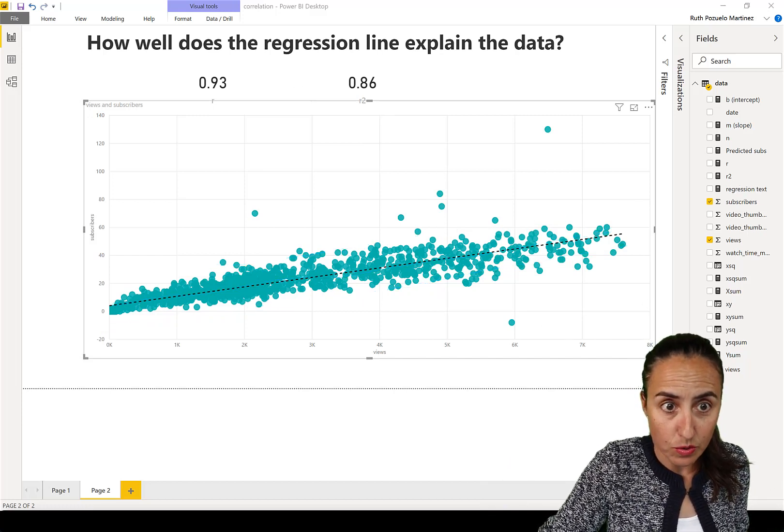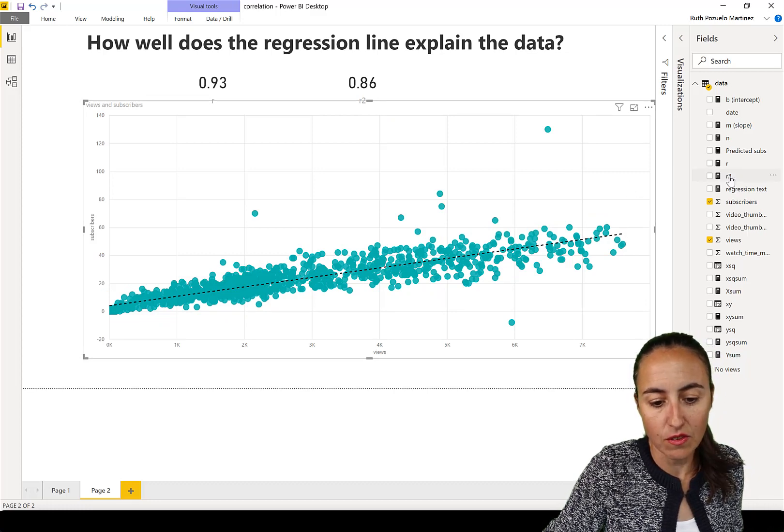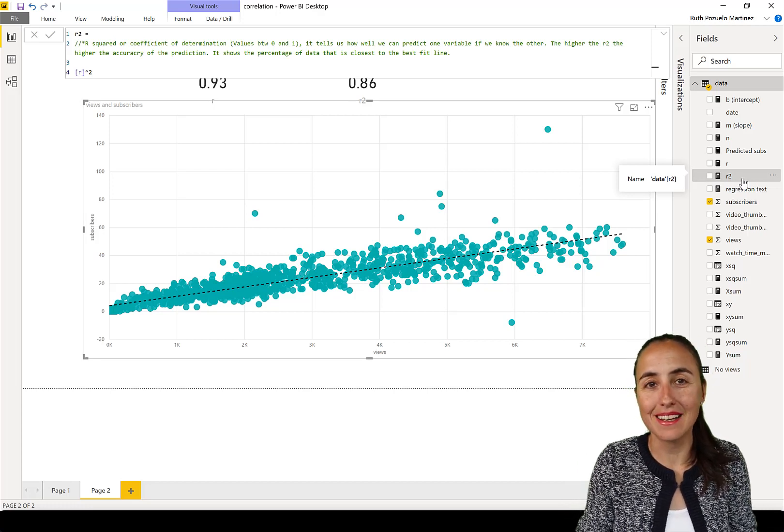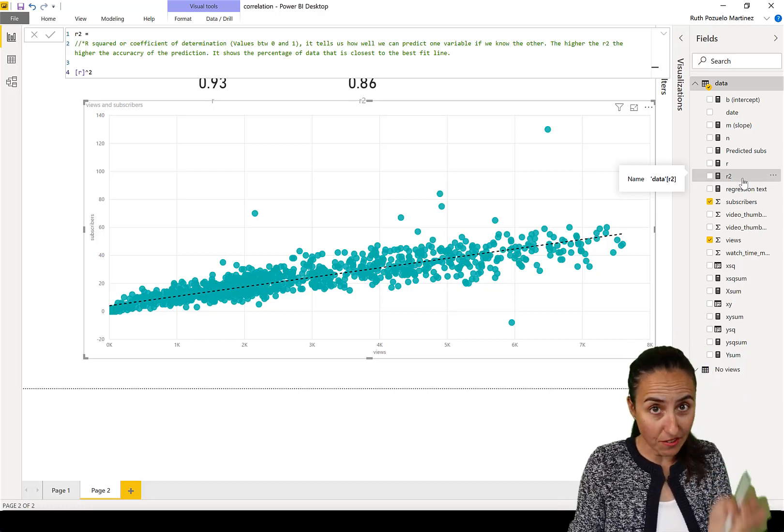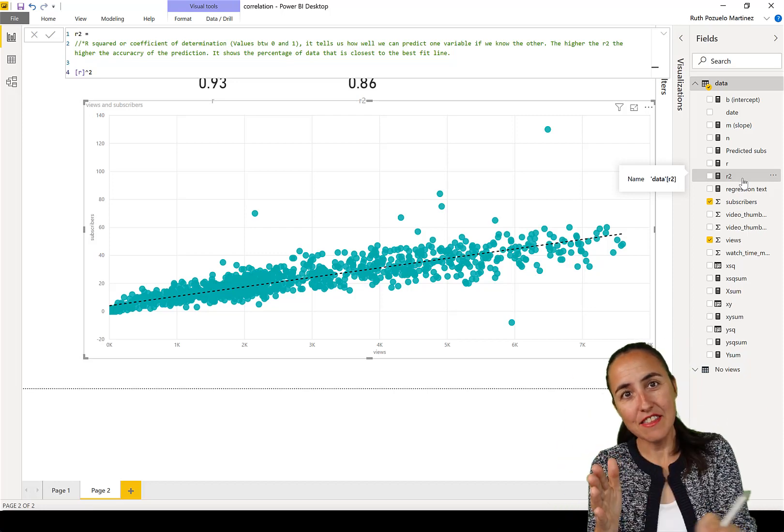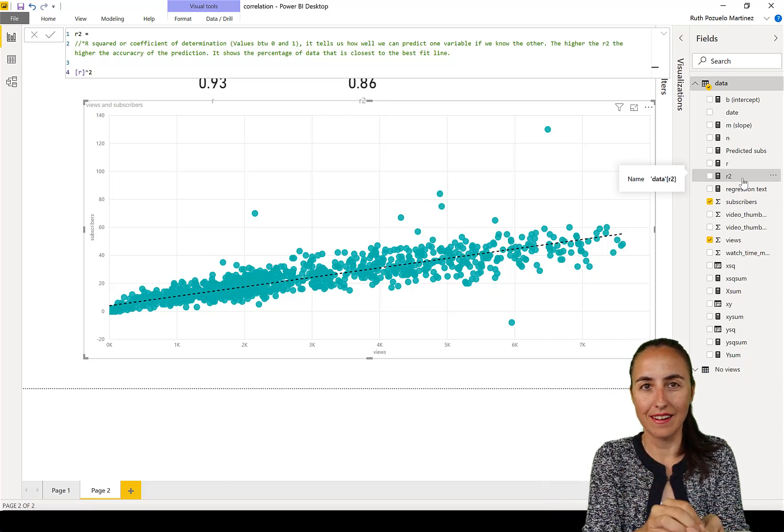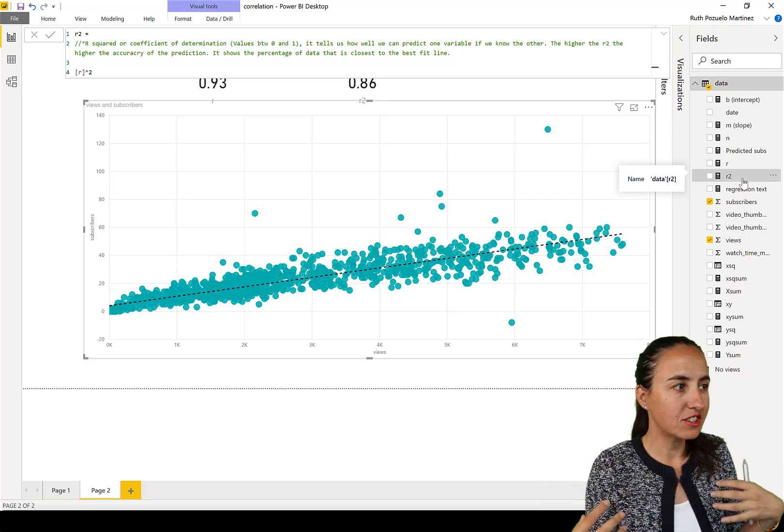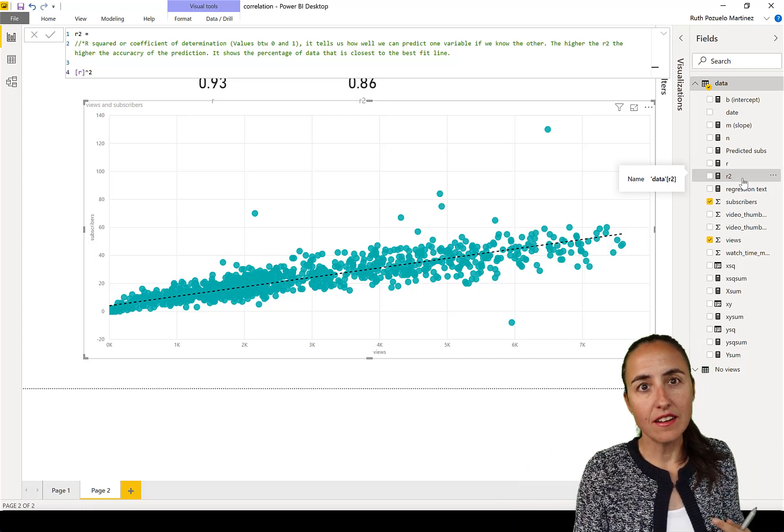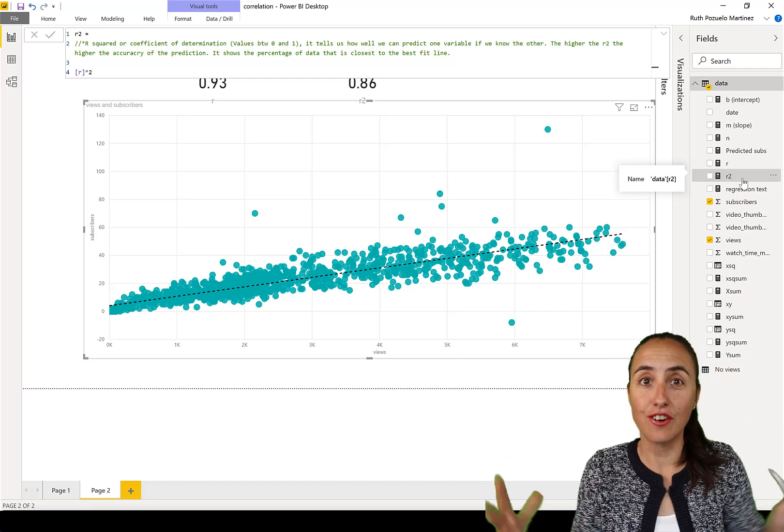And r2, it is calculated. I mean, it's just normal math. So there's no idea that I just sit here and do the calculations, but it's the square of r. And the value goes from zero to one. So the higher the value, the more points that can be explained by your line. So basically correlation, it gives us more information about our regression line and if it is a good fit or not, and if it's positive or negative or if it's strong or not.